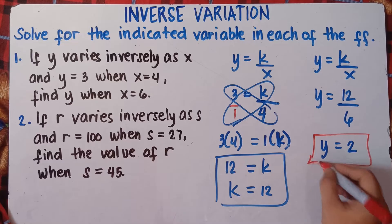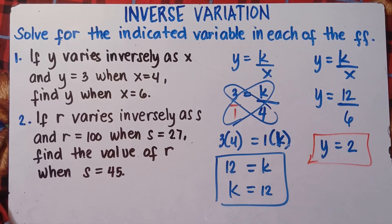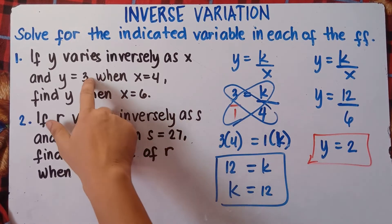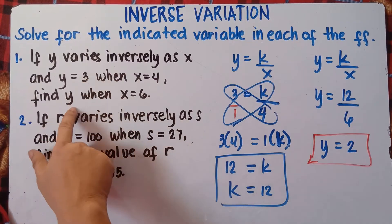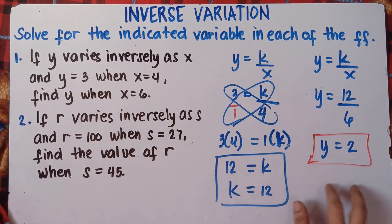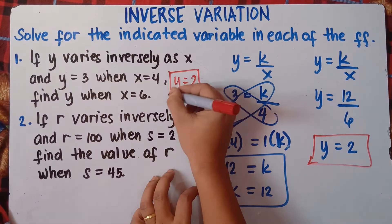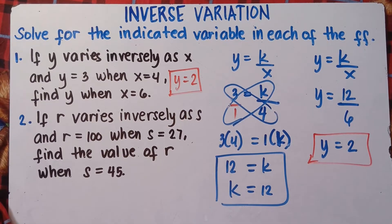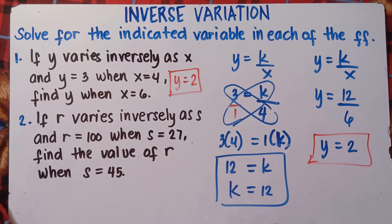Check: is our y value decreasing? Yes — from 3 it becomes 2. That's the answer for number 1. To solve inverse variation, you need to get the value of k, and once you get k, simply substitute it into the last equation.